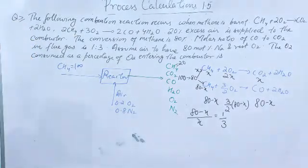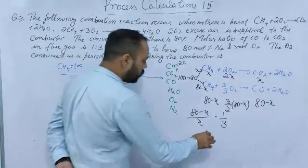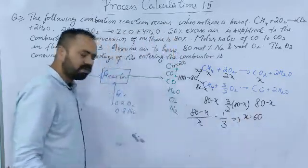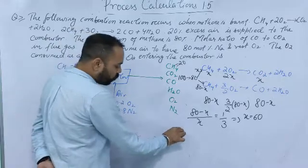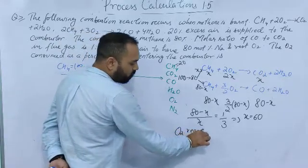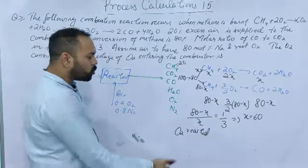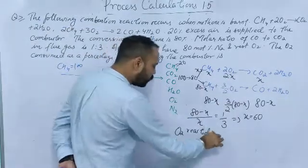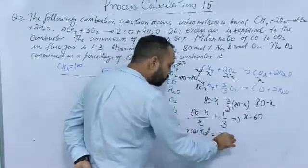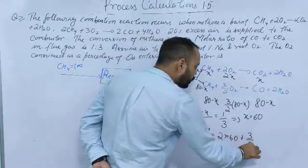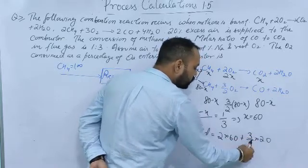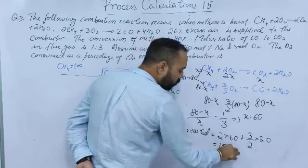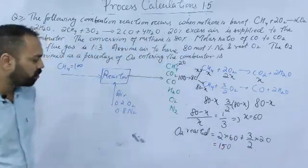From that ratio you can find x. You will find that x = 60. Now, the O2 reacted is the sum of oxygen from both reactions: 2x + 3/2 × (80 − x) = 2(60) + 3/2 × (20) = 120 + 30 = 150 moles.